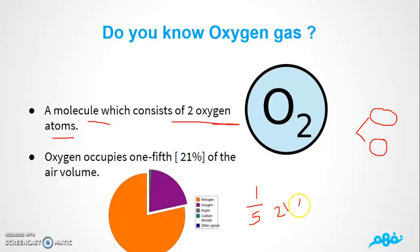When talking about oxygen gas, it occupies one-fifth of the atmosphere, or 21% of the air volume.